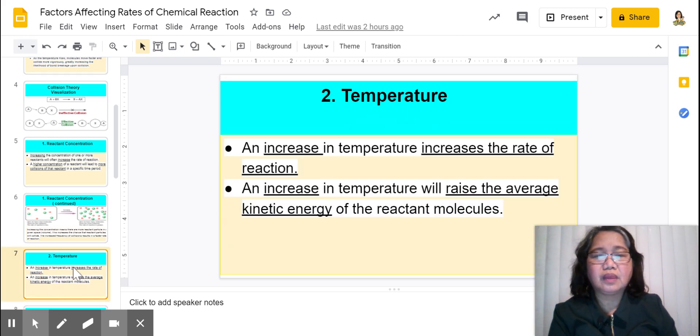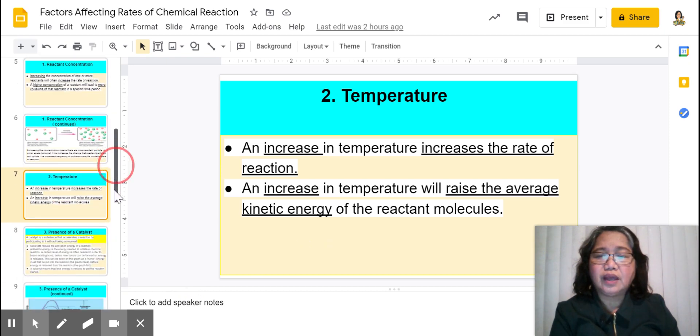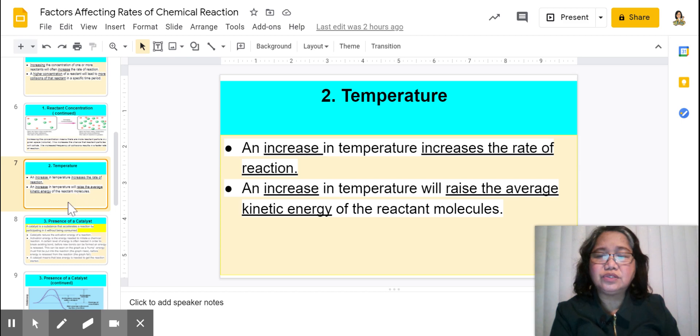So next is the effect of temperature. So definitely an increase in temperature increases the rate of the reaction, and this is because an increase in temperature will raise the average kinetic energy of the reactant molecules. So the more the energy, the more the collisions.